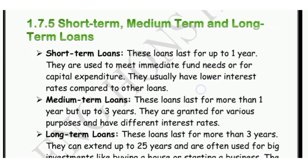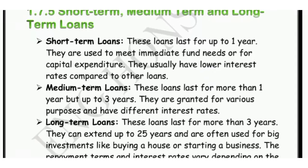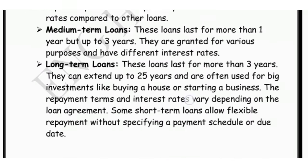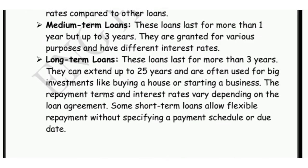Phir hain short term, medium term aur long term loans. Loans ko teen categories mein baata gaya hai. Short term loans: ek saal se kam ke hote hain, interest rate bhi kam hota hai. Medium term loans: ek saal se teen saal ke beech ke hote hain, thoda higher interest rate hota hai. Long term loans: 3 saal se zyada ke hote hain jaise home loan, aur inka bhi higher interest rate hota hai.